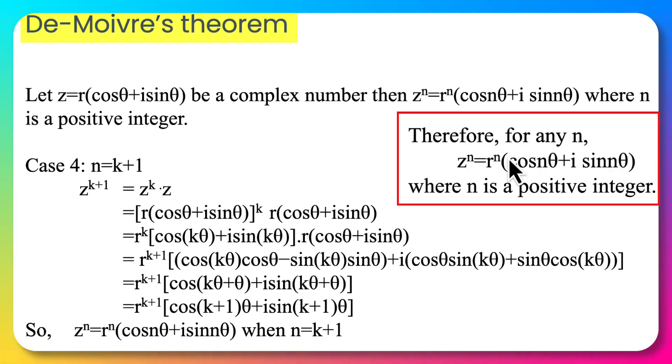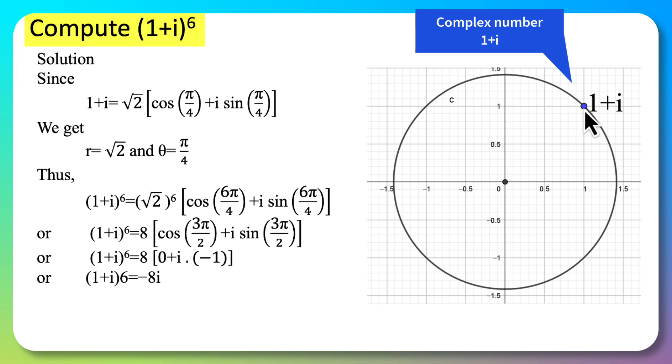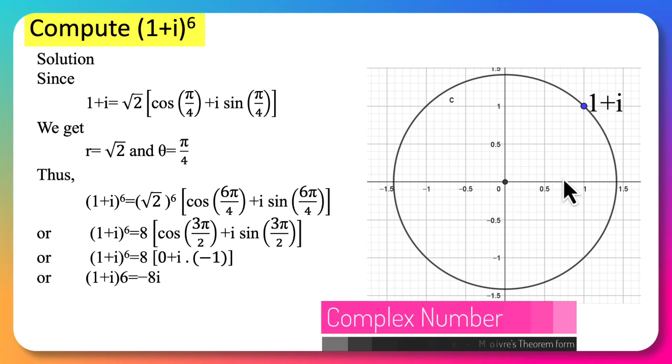Therefore for any n, z^n = r^n(cos nθ + i sin nθ) is valid. We conclude the proof of De Moivre's theorem. There are many advantages of De Moivre's theorem. Among them we will see how it helps to multiply. Here 1+i is a complex number which has magnitude √2 and argument π/4, meaning the distance from the origin to the complex number is √2 and the angle made by the complex number with the x-axis is π/4.